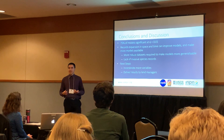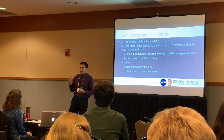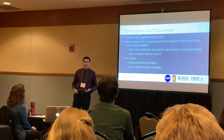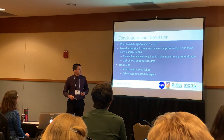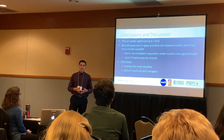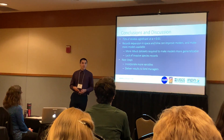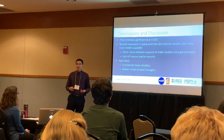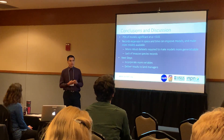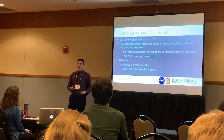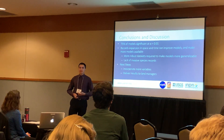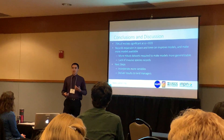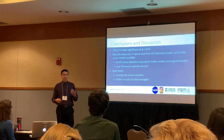A big issue is that land managers and the public generally want to remove invasive species when they find them on the land — they don't necessarily want to let them stick around and figure out when they flower. Another issue is that there are fewer sites where records would be consistently recorded. To improve this analysis, we can incorporate more variables and better temporal resolution. I only used temperature and precipitation, but there are variables such as vapor pressure deficit, growing degree days, cooling degree days, and photoperiod that could improve these models.